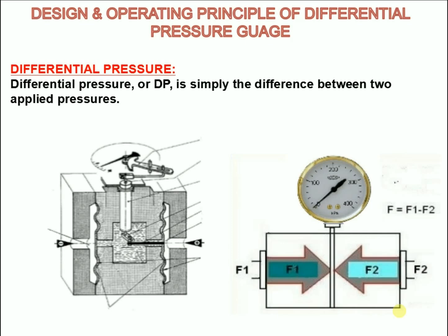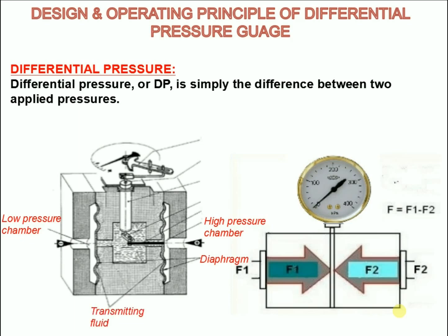Now we will see the operation of the differential pressure gauge. When process pressures are applied to the low pressure chamber and high pressure chamber, the area between the two diaphragms is filled with a transmitting fluid. Any pressure differential will deflect the diaphragm, and the deflection is hydraulically transmitted to the other diaphragm by the transmitting fluid. The deflection of the diaphragm is transmitted to the pointer by means of a rotating axle that provides frictionless transmission and a metal-to-metal seal with the help of links.